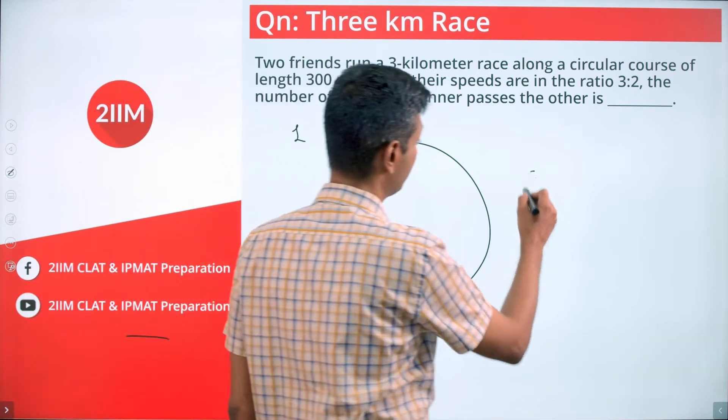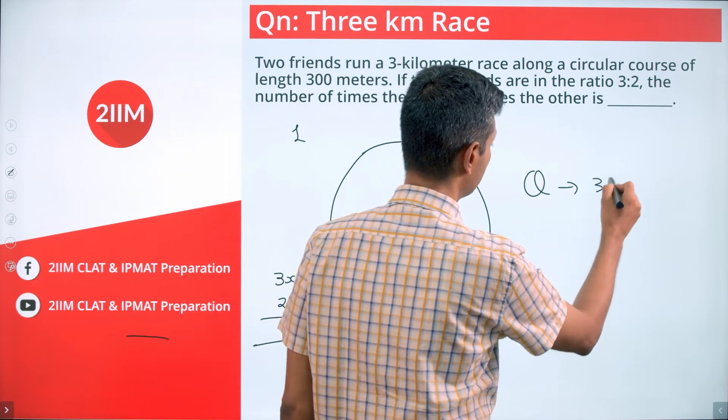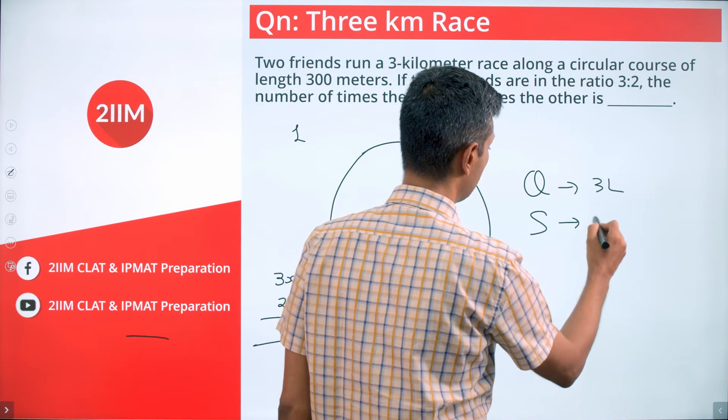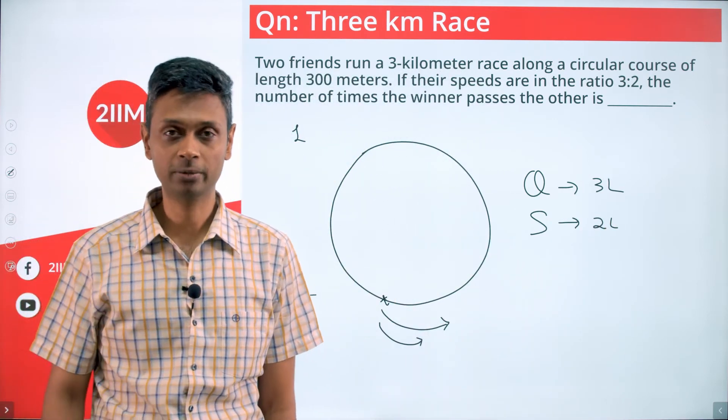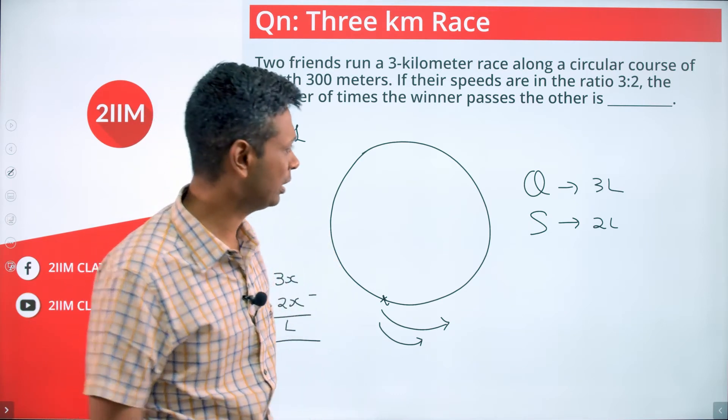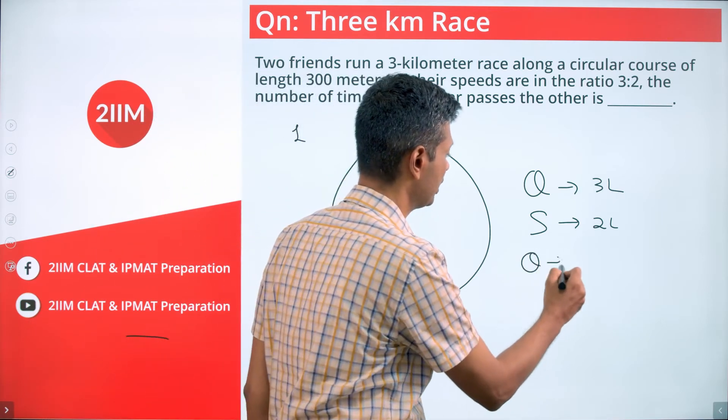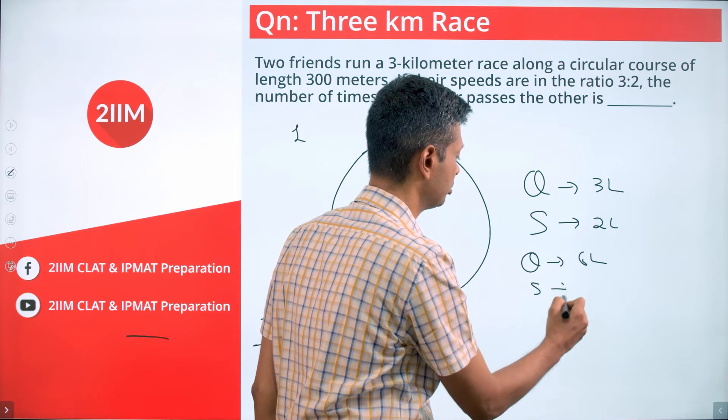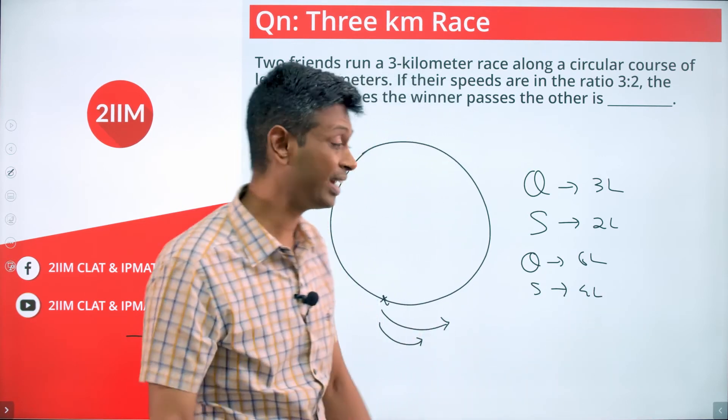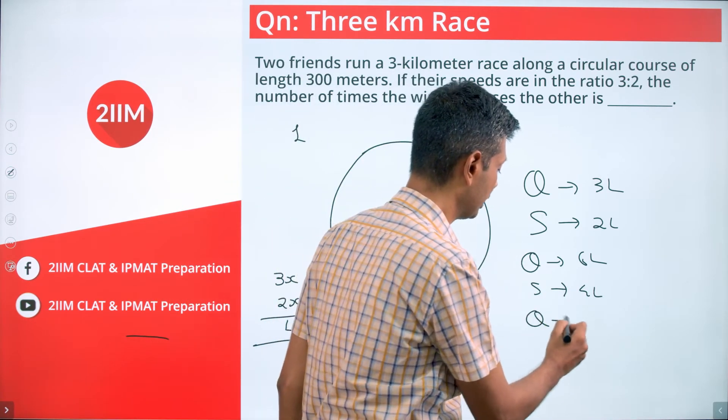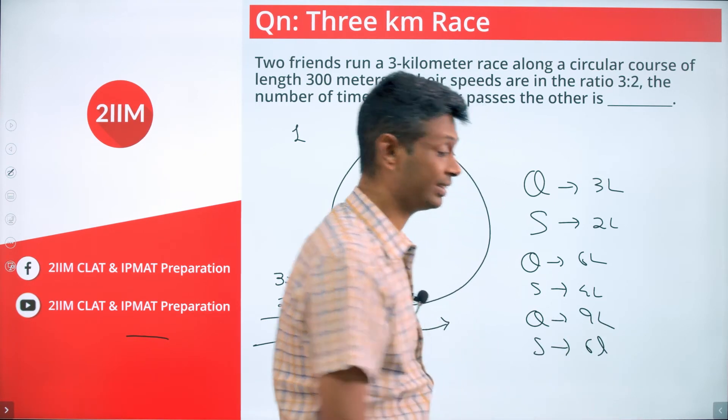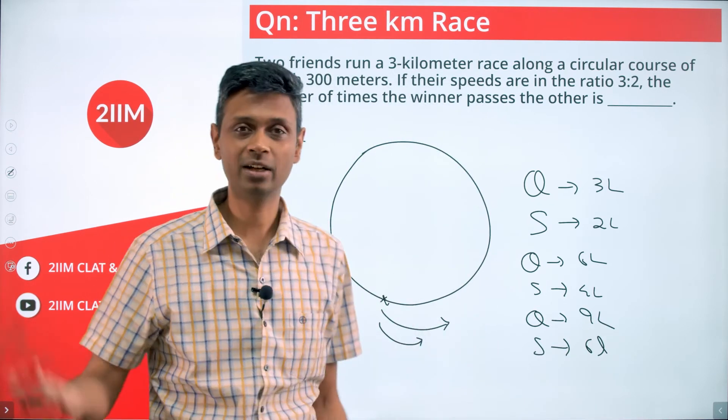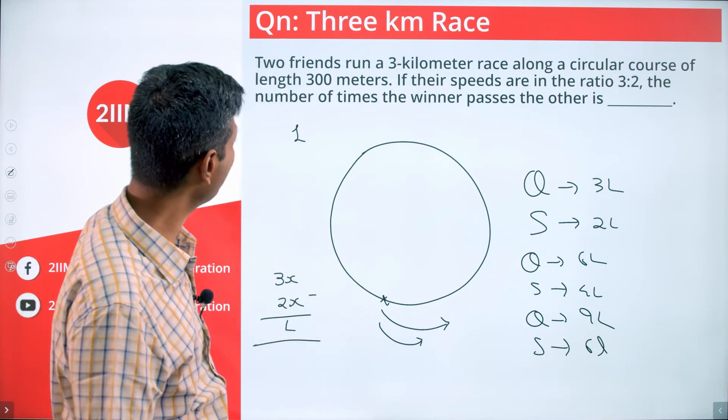The quicker guy completes 3x, the slower guy completes 2x. That is when the quicker guy will overtake the slower guy. So when will the next time happen? The next time will happen when the quicker guy does 6x laps, slower guy has completed 4x. When will it happen the next time around? Quicker guy does 9x, slower guy does 6x. The time after that, 12x and 8x, and so on.